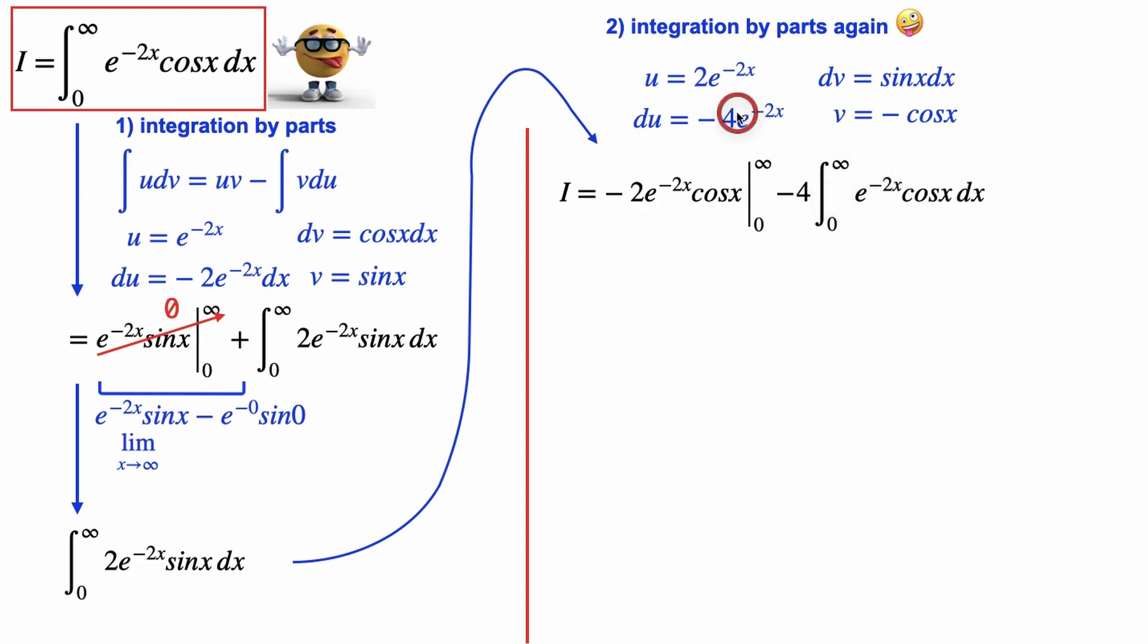Now I also brought the 4 out of the integral sign, and we're going to evaluate this term, which isn't too bad. So in the limit as x goes to infinity, this term goes to zero because of the negative exponent.